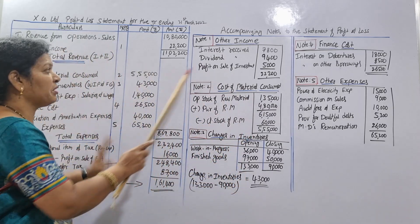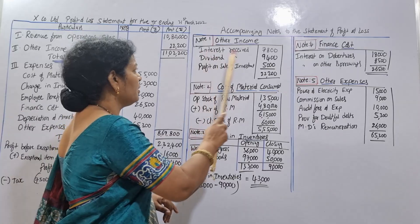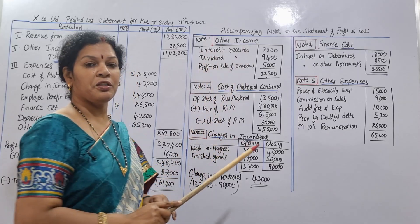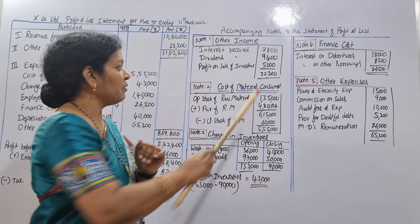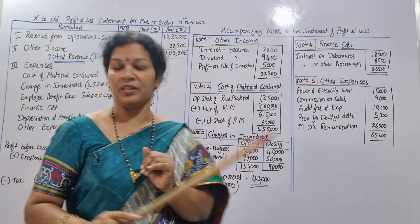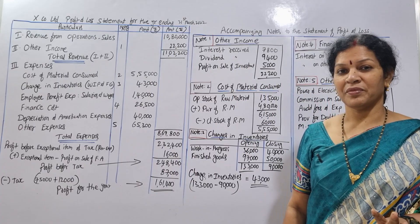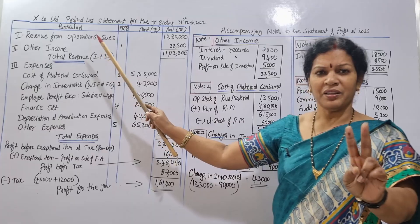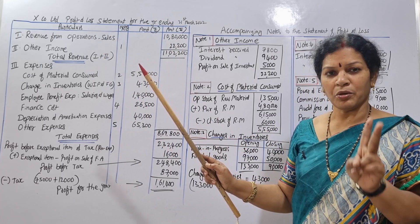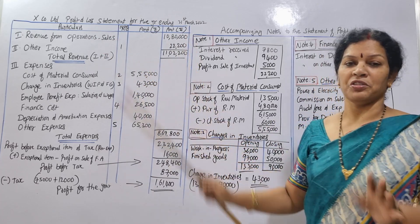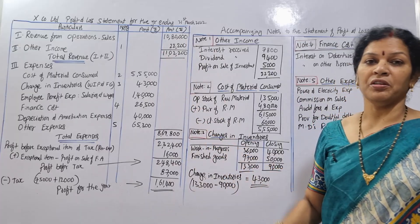Under other income, we have a total of 22,200. The incomes include profit on sales of investment. Revenue from operations is item one, other income is item two. Total revenue is 1 plus 2. The total revenue including sales comes to 11,22,200.